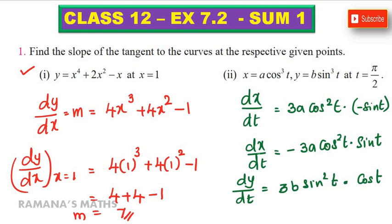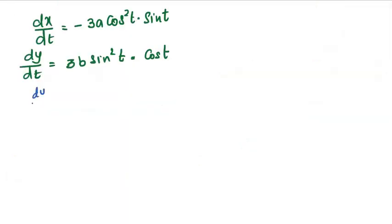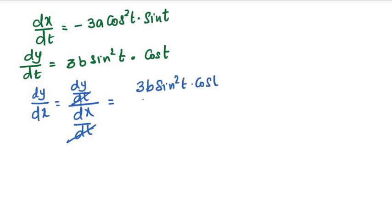We have to find dy by dx. dy by dx is dy by dt divided by dx by dt. So dy by dt, 3b sin square t cos t, divided by minus 3a cos square t sin t.